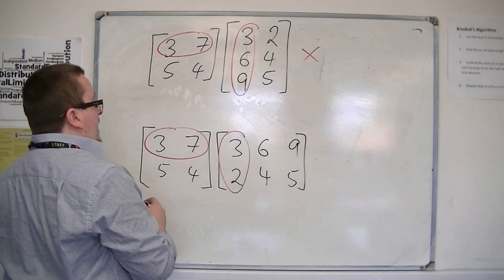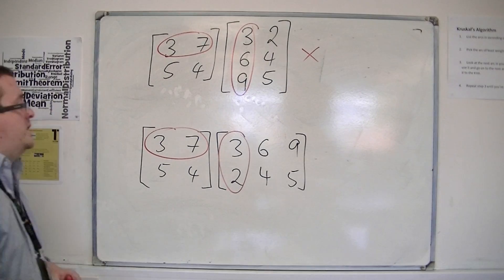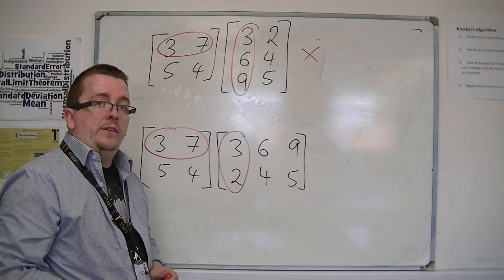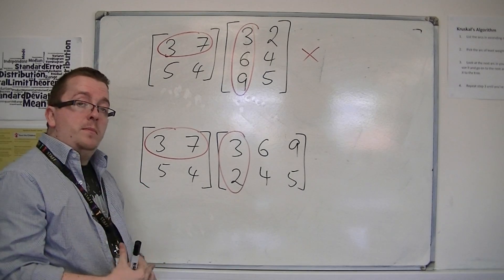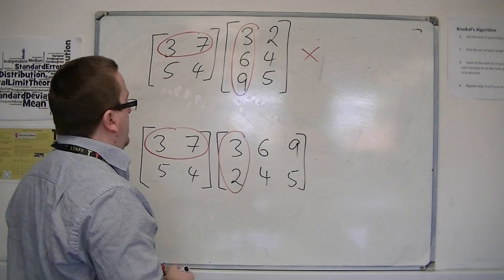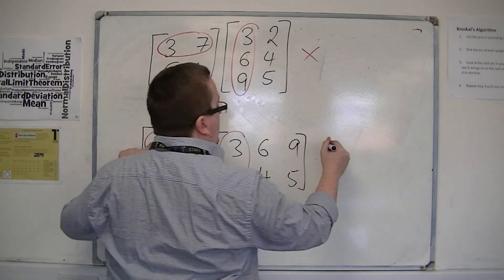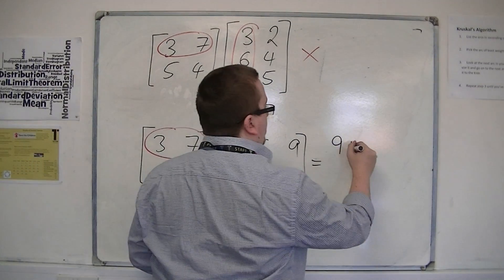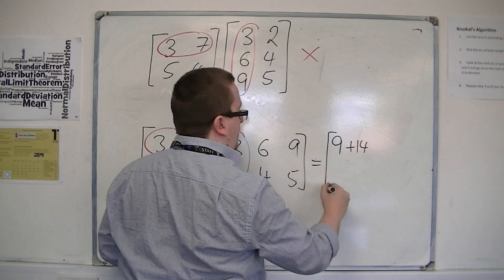So, in actual fact, it really depends on how many columns the first one has by how many rows the second one has. If that number is the same, then we can multiply them. So, we would have 3 times 3 is 9, plus 7 times 2, so plus 14. I don't know if I'm going to have enough space, you'll see.